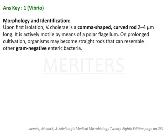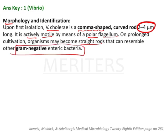If we go through the important points of Vibrio, the morphology: V. cholerae is generally comma-shaped and 2 to 4 micrometers long, and it is actively motile by polar flagellum. And if we try to cultivate this bacteria for long, it may become straight rod-like, and then these look like gram-negative enteric bacteria which are bacillus. So gram-negative enteric bacteria-like shape can occur if it is cultivated for a prolonged period of time.